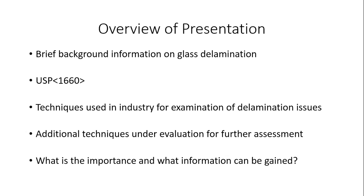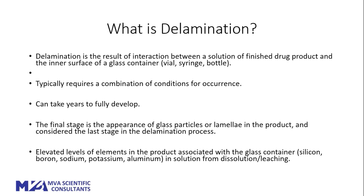We'll wrap up with what is the importance of this type of testing and what kind of information can be gained. In general, what is delamination? It's primarily the last stage in a process that is usually the first observation when glass particles are observed in a product vial or syringe. It is really the final stage — the result of interaction between the drug product and the interior surface of a container — and it often takes around five years or so to fully develop.